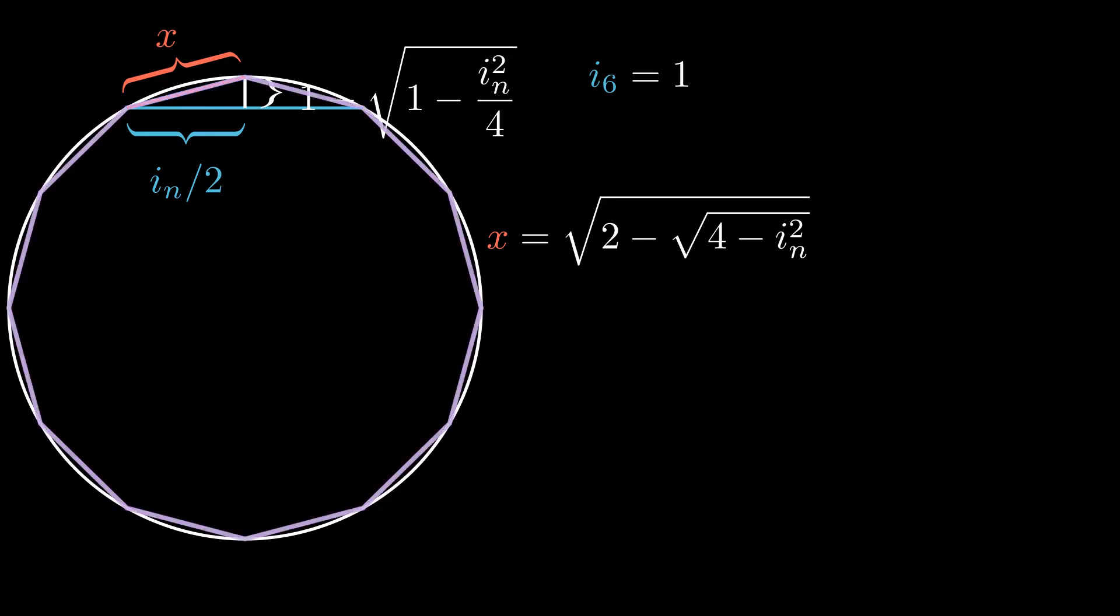This line is also a side of an inscribed 2n-gon, so it can be written as i_2n.